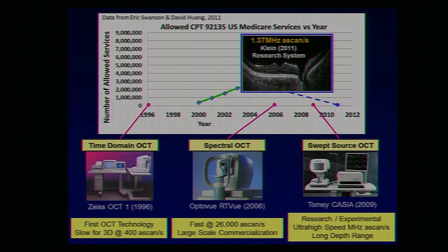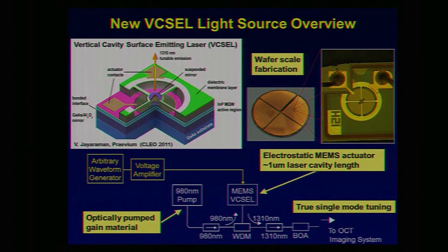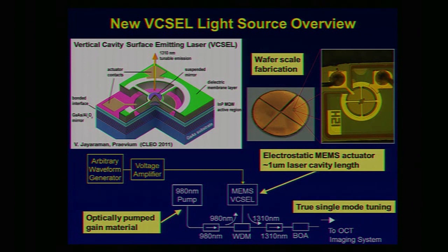The VIXEL — Vertical Cavity Surface Emitting Laser — is a light source for swept source OCT imaging. It has a stationary mirror at the bottom and a second mirror suspended above. A capacitive plate creates an attractive force that pulls the top mirror down, shortening the cavity length and tuning a shorter wavelength of light. Manufactured with wafer-scale fabrication, the VIXEL delivers true single-mode tuning. The electrostatic actuator is very fast, and the micron-scale cavity length allows very rapid tuning.